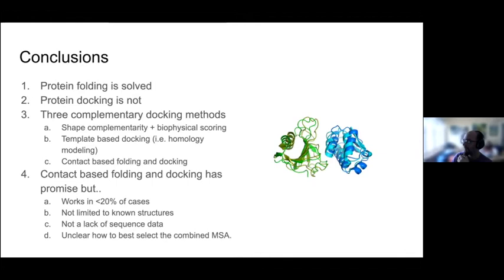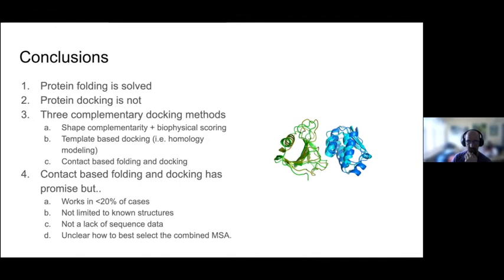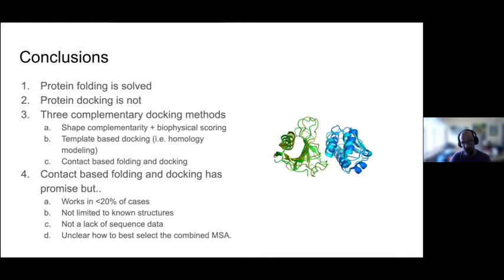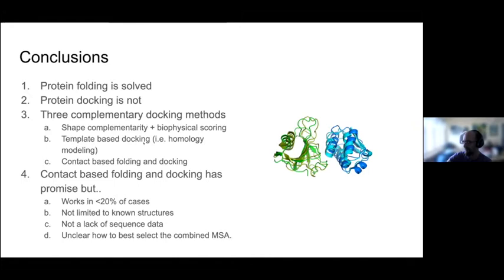To conclude: today, even before AlphaFold, we can predict the structure of all individual proteins as long as they are decently well-folded and we have enough sequence data, which we do in most cases. However, we are still quite far from predicting all interaction partners. We currently have three methods for docking: traditional shape-complementarity methods, template-based docking, and the contact-based combined folding-and-docking method introduced here. Their performance is quite similar, so combining them gives better results.